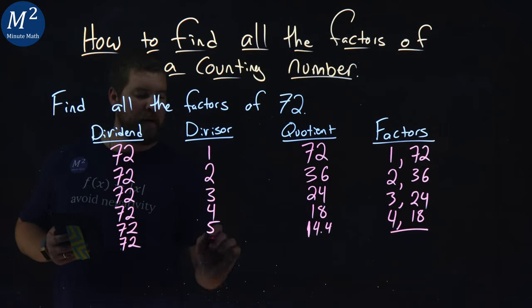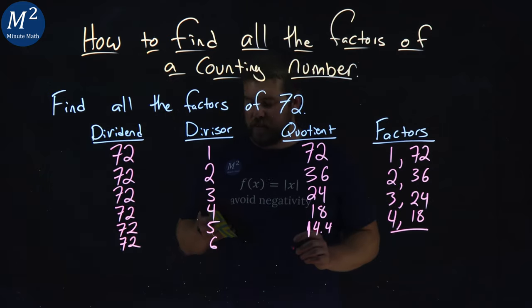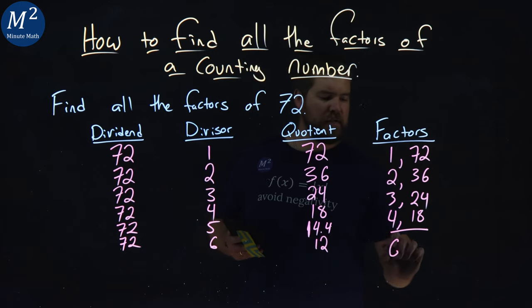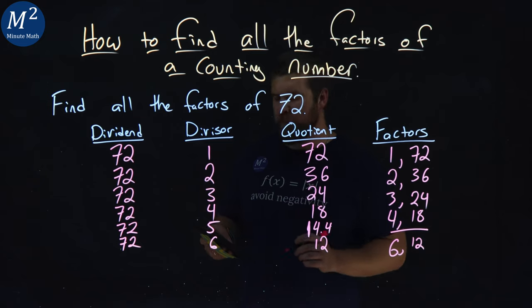What about 6? 72 divided by 6. 6 goes into 72, we keep going up, 12. So factors of 6 and 12. Right there. Not too bad.